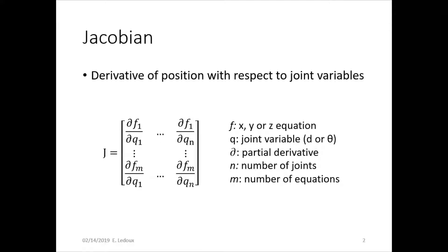The Jacobian is the derivative of position with respect to joint variables. Here you can see the partial derivative matrix, where f is the x, y, z equation of the forward kinematics for the robot, the end effector position. Q represents a joint variable, so that would be d or theta.